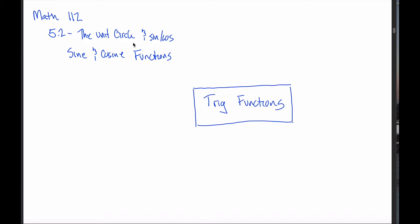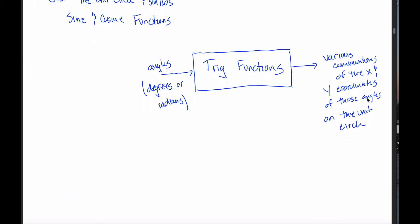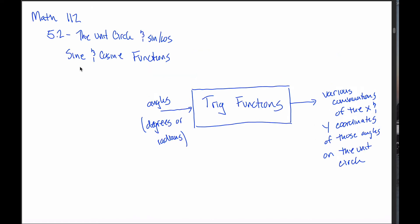Understanding that connection will be key for the rest of this class, because the rest of this class deals with trig functions. Trig functions are exactly those functions that take in different angles — specified in either degrees or radians — and kick out either the x-coordinate or the y-coordinate of the points on the unit circle that correspond with those angles. In this section we're only going to see two functions: the sine function and the cosine function, typically abbreviated SIN and COS. The sine function takes in angles and spits out the y-coordinate of the point on the unit circle with that angle.